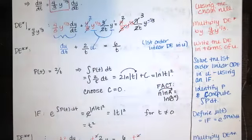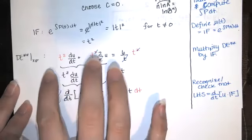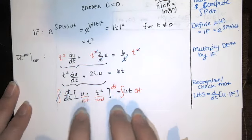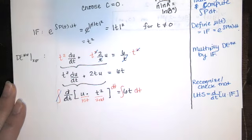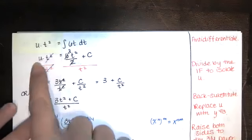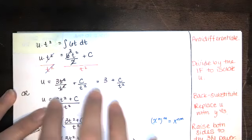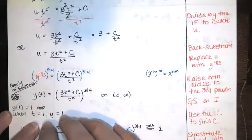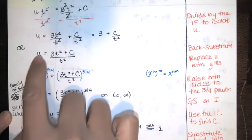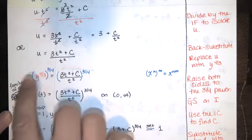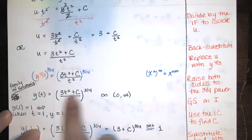You have this first-order linear equation to solve: identify p(t), anti-differentiate, and e to that power is your integrating factor. Multiply by the integrating factor — that causes the left-hand side to be the derivative of u times the integrating factor. To get rid of the derivative, take the anti-derivative. To get rid of the multiplication, do the division. Then back-substitute: u is something, but you were looking for y, so replace u with y to the four-thirds, and raise both sides to the reciprocal power to get y by itself.